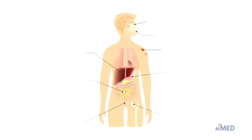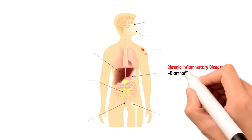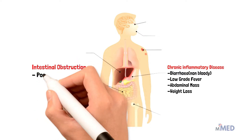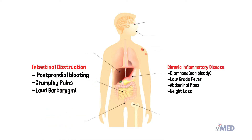More than 75 percent of cases develop within people whose ages are between 11 to 35. Looking at clinical features and symptoms, Crohn's disease as a chronic inflammatory disease can present with diarrhea — sometimes bloody — low-grade fever, abdominal mass due to impaired digestion, and weight loss due to malnutrition. Intestinal obstruction can cause post-prandial bloating, cramping pains, and borborygmi, which are intestinal rumbling sounds caused by moving gas.